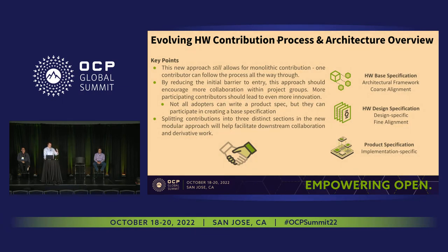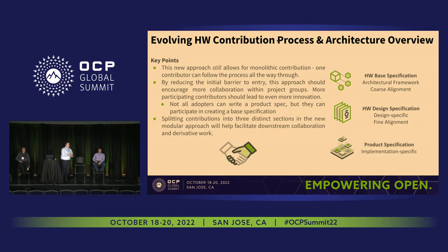This also allows for the creation of a new hardware spec architecture. As you can see, this process builds out our architecture from just one hardware spec to now three different specifications: a base spec — course alignment, very IP-lite; a design specification — design-specific, generally built off customer requirements, much more IP-heavy; and then finally a product spec, which is implementation-specific and tied to a product.